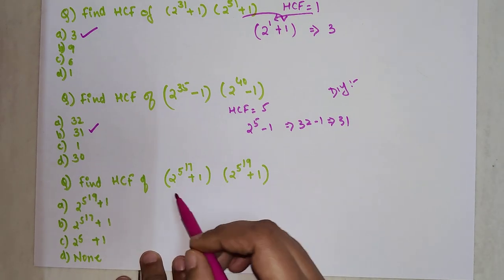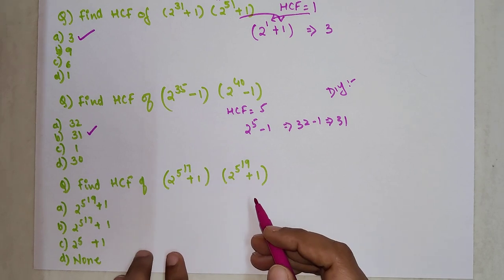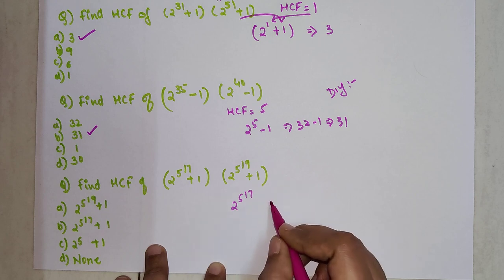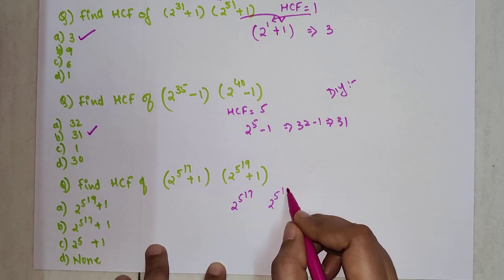For this one we have 2^(5^17) and 2^(5^19). So we have 5^17 and 5^19.